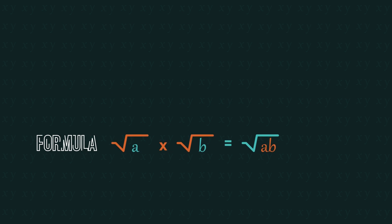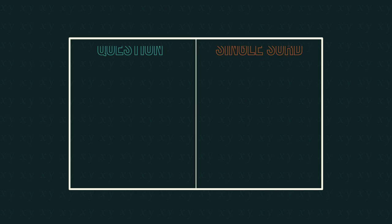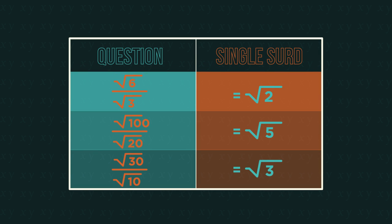So that's multiplying surds. Now for dividing surds, can you see what's happening? As with multiplying, you just divide the numbers.